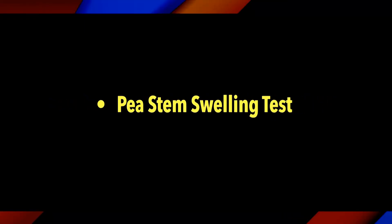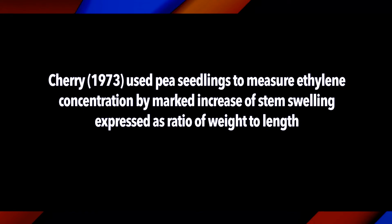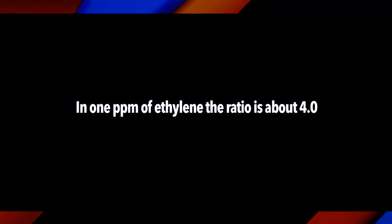The third test for the presence of ethylene is the pea stem swelling test. This test was performed by Cherry in 1973 using pea seedlings to measure ethylene concentration by the marked increase in stem swelling, expressed as a ratio of width to length. In one part per million of ethylene, the ratio is about 4.